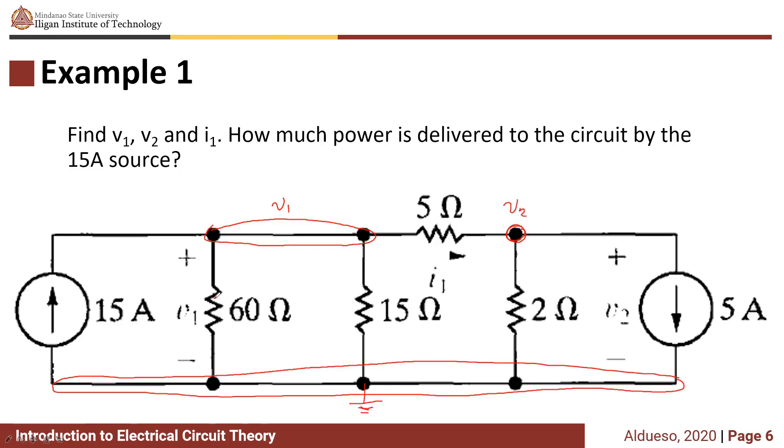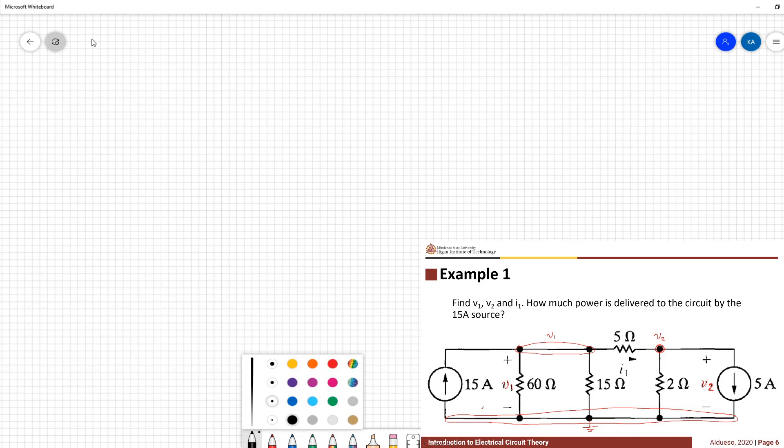So applying KCL at node 1, KCL at node V1. So remember for convenience, we assign current going out from the node.